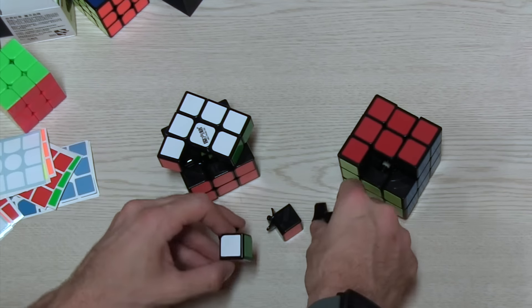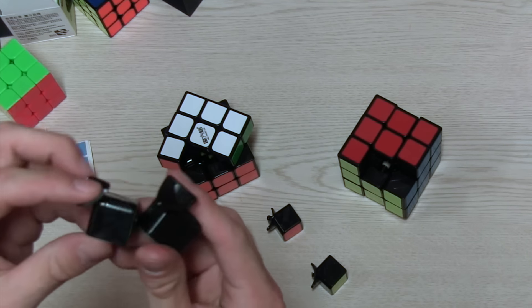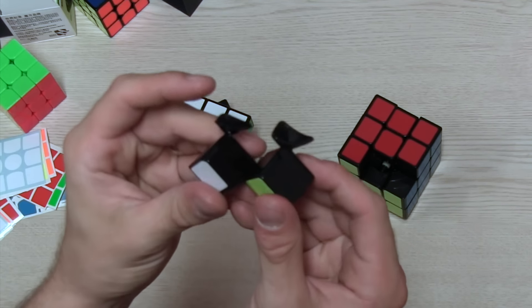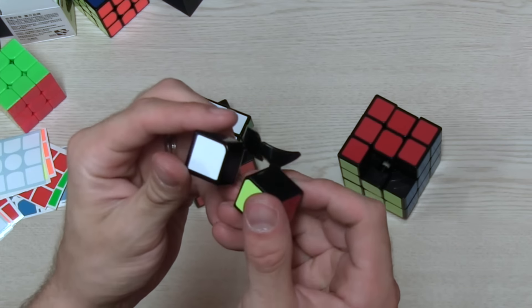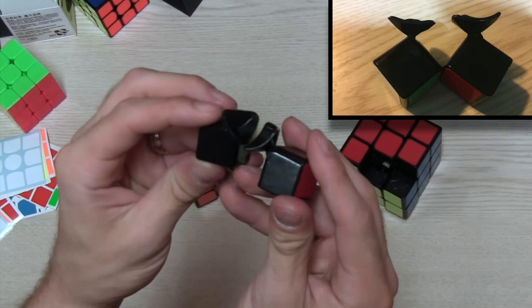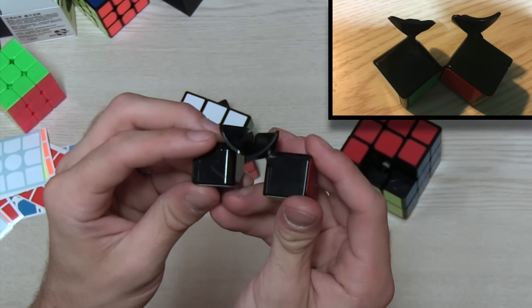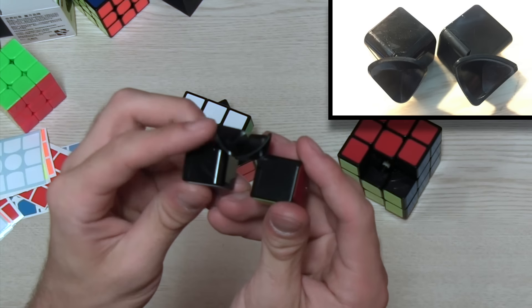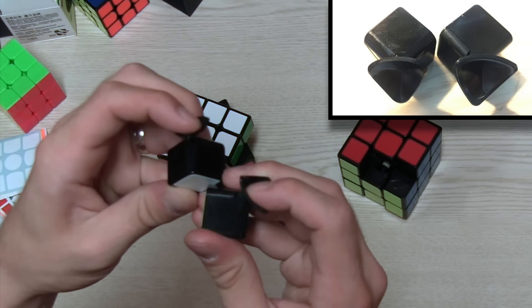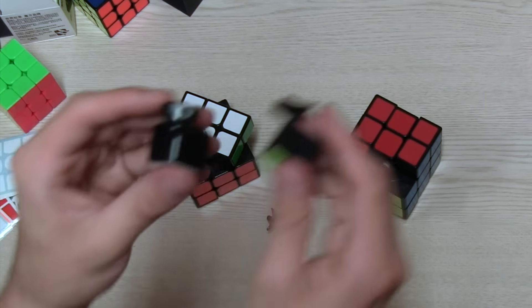There we go. So first we'll look at the corners. Very similar design. Nothing too crazy. Just boxy pieces with a very thin rounded end to it.